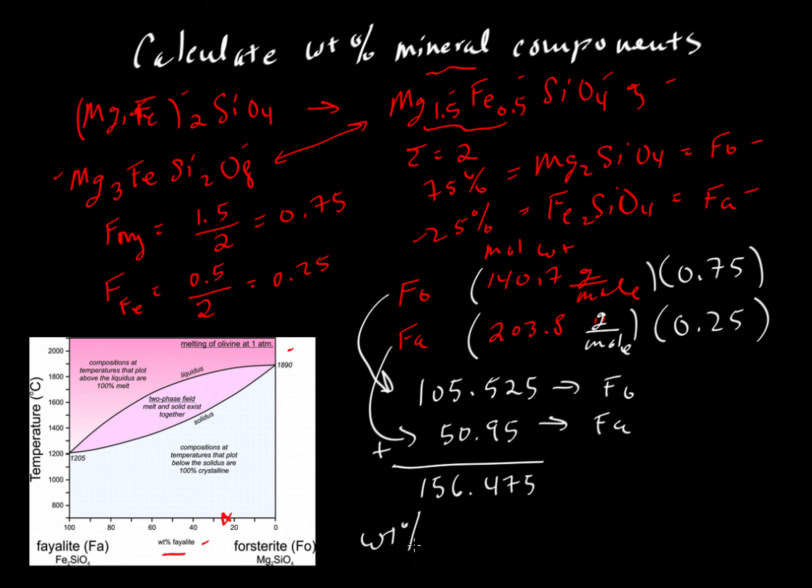What would be the weight percent of fayalite? That would be the amount of fayalite, 50.95, multiplied by 100 since we want it in percent rather than a fraction, divided by 156.475, the total weight. This comes out to about 32.6 weight percent for fayalite.